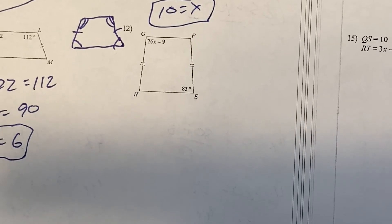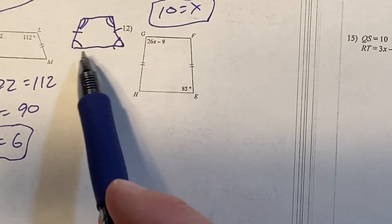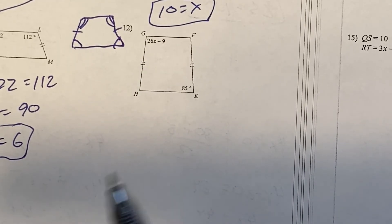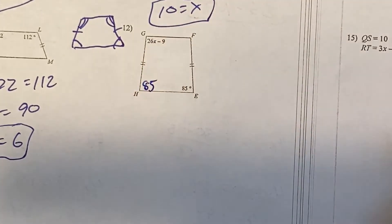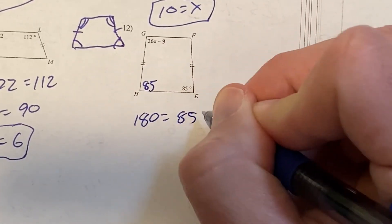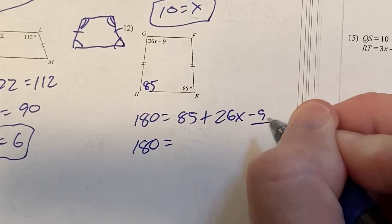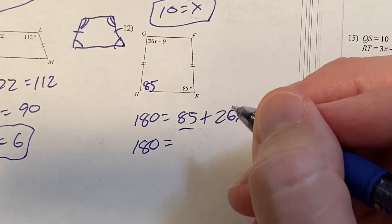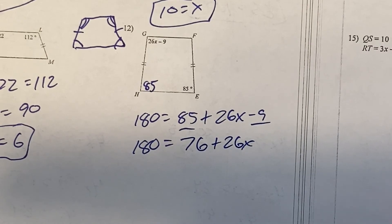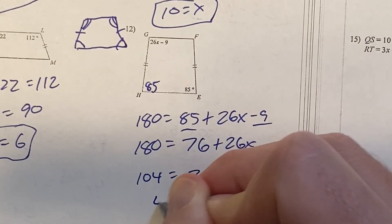Number 12 is an isosceles trapezoid. The two bottom angles are congruent and the two top angles are congruent, but a top angle and a bottom angle add to 180. If the bottom angle is 85, the top angle plus 85 equals 180. So: 180 equals 85 plus 26x minus 9, combine constants — 85 minus 9 is 76 — so 180 equals 76 plus 26x, subtract 76 to get 104 equals 26x, divide by 26, x equals 4.